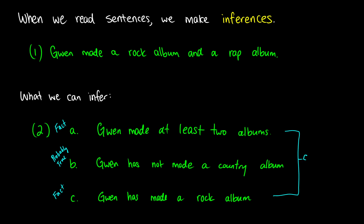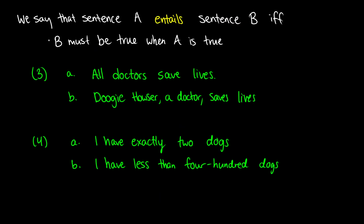The ones we're looking at — A and C — are called entailments. These are facts, things that must be true based on the sentence you're given, not things that are probably true. We say that sentence A entails sentence B if and only if B must be true when A is true.